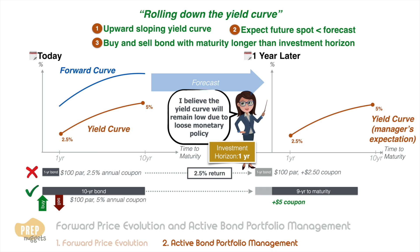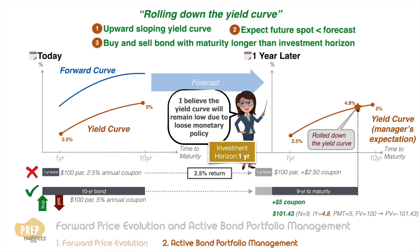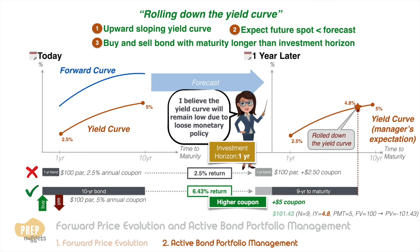Now let's examine the first year return for a 100 par 10-year bond with a 5 coupon paid annually. After one year, the coupon return is five dollars. But because the bond rolls down the yield curve where it is valued at a nine-year yield of 4.8 percent, the price appreciates to 101 dollars and 43 cents. The gain in this scenario is 6.43 percent, much higher than the 2.5 percent gain if the manager had simply bought a one-year bond. The combination of a higher yield in bonds with longer maturities and the potential price appreciation as the bond rolls down the yield curve gives the active manager opportunity to extract higher gains. The conditions for this strategy are: the yield curve should be upward sloping, the future spot rate is lower than forecast, and the manager buys and sells bonds with maturity longer than the investment horizon.